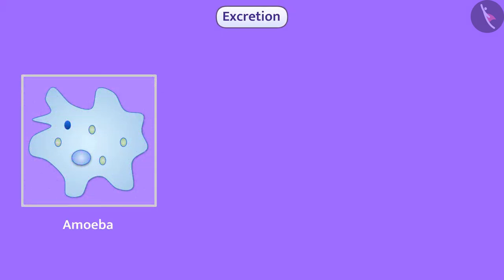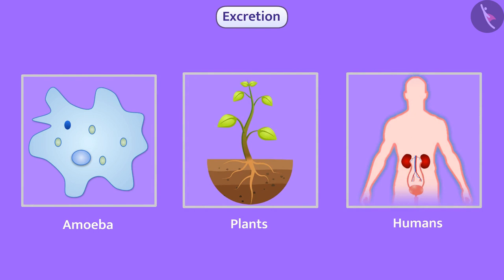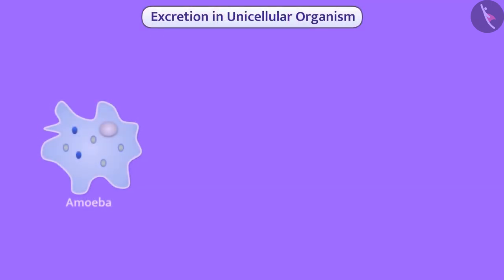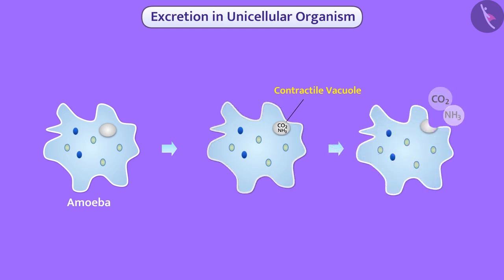Let us see how excretion occurs in different organisms. In the cytoplasm of some unicellular organisms, the waste, such as carbon dioxide and ammonia, gets collected into the contractile vacuole and is excreted outside the cell surface by the action of diffusion.